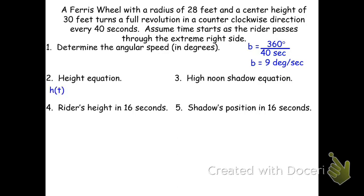For the height equation, h(t) = 30 + 28·sin(9t). The shadow's equation is s(t) = 28·cos(9t). The shadow is always on the ground, so there's no extra 30 feet added.